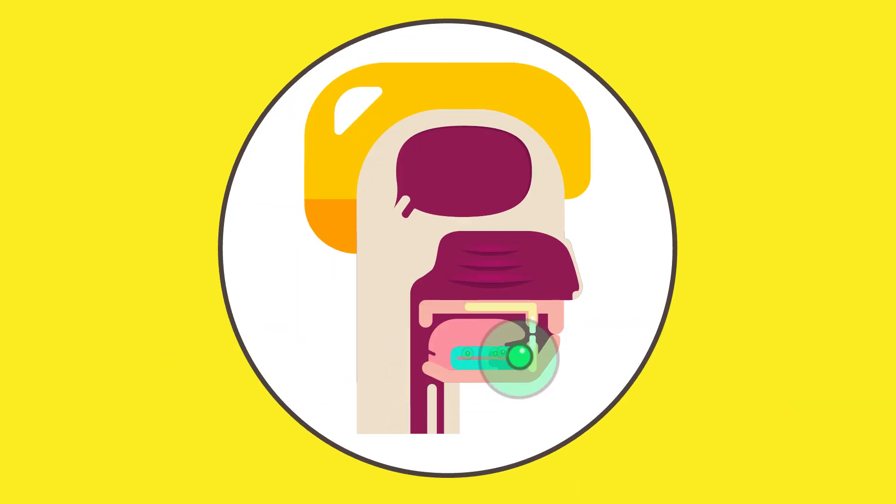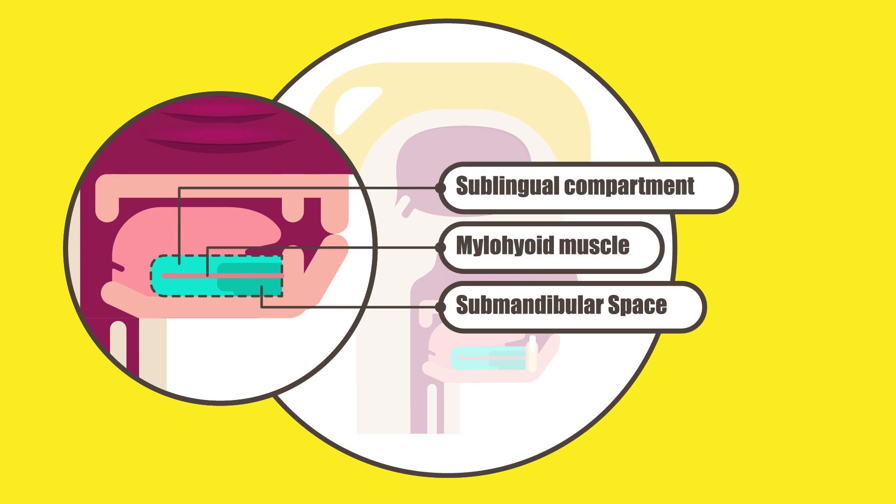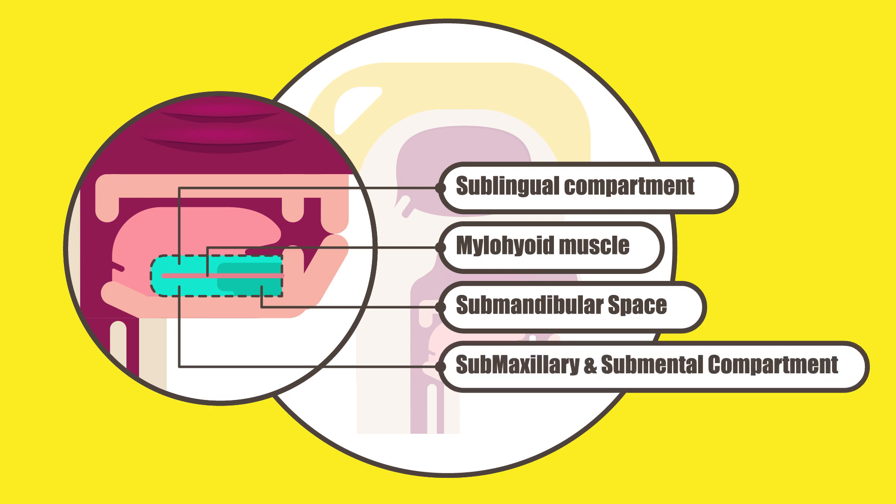Its location is the infection of submandibular space, which is divided into two compartments by mylohyoid muscle: sublingual compartment above muscle, and submaxillary and submental compartment below muscle.